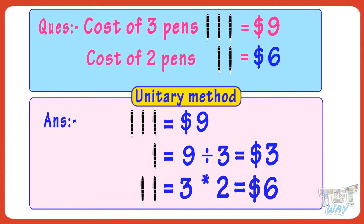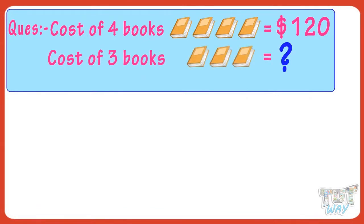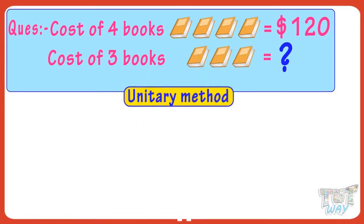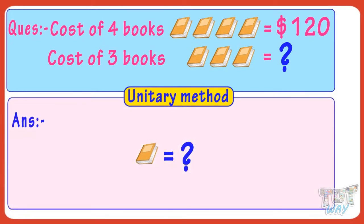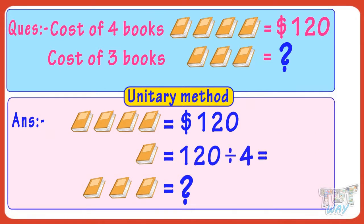Now let's take another example. The cost of four books is $120. Then what is the cost of three books? Let's find it out with the help of the unitary method — that is, first we will find the cost of one book and then we will find the cost of three books. If the cost of four books is $120, then the cost of one book will be $120 divided by 4.